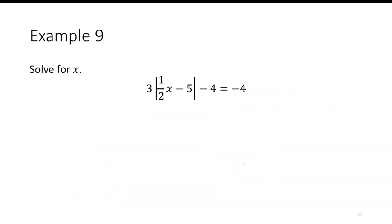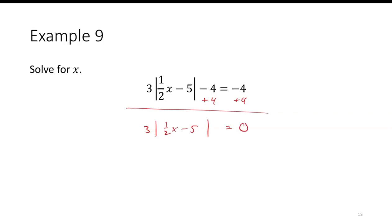For this one: 3 times the absolute value of one-half x minus 5, minus 4, equals negative 4. First, add 4 to both sides, giving 3 times the absolute value of one-half x minus 5 equals 0. Then divide by 3, so the absolute value of one-half x minus 5 equals 0.